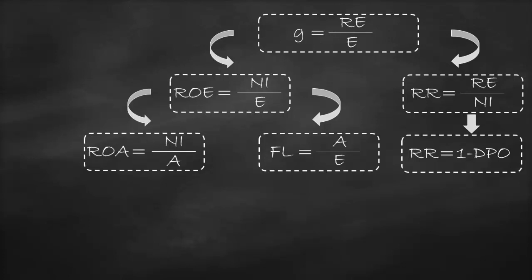The return on assets formula is net income divided by assets, and the financial leverage formula is assets divided by equity. Assets will offset assets, so we will end up with the original formula of return on equity of net income divided by equity.